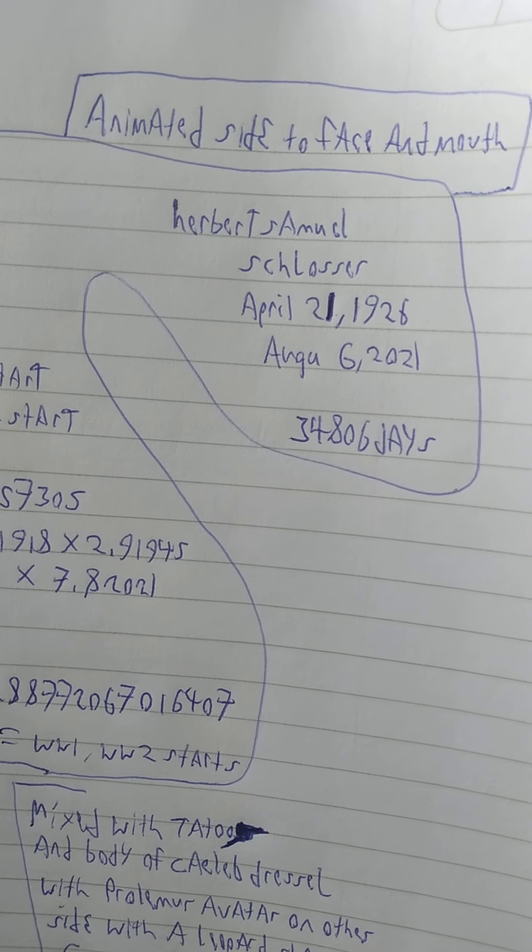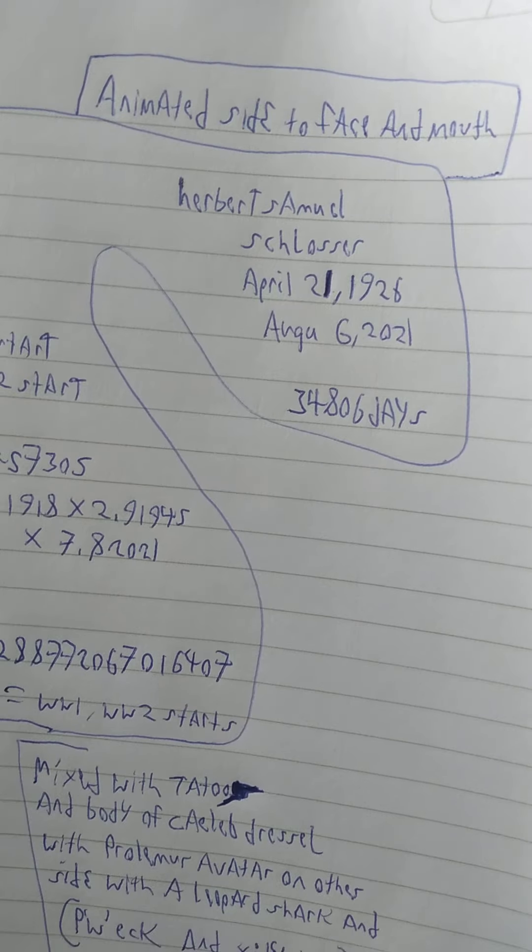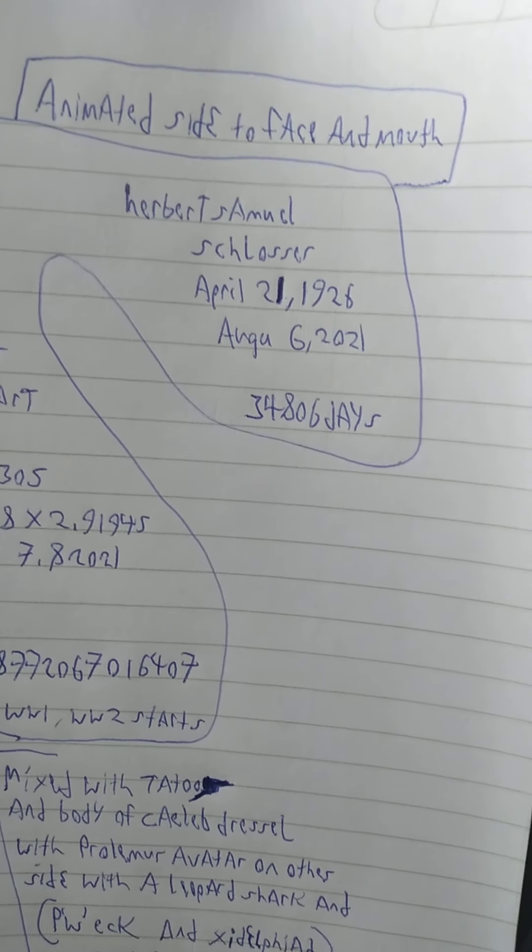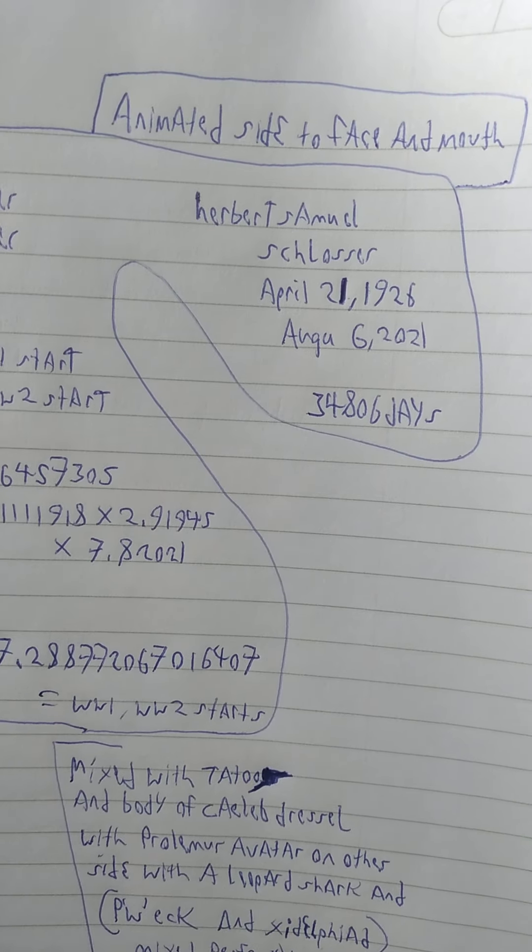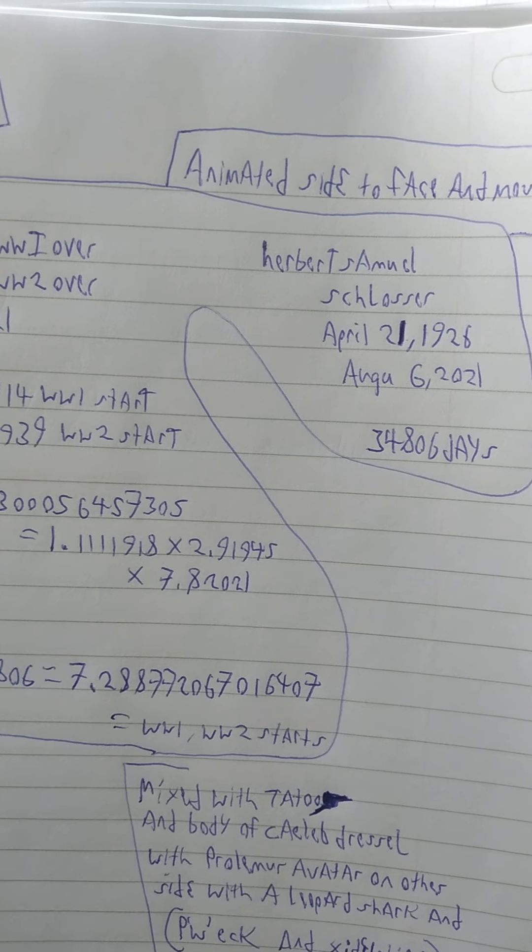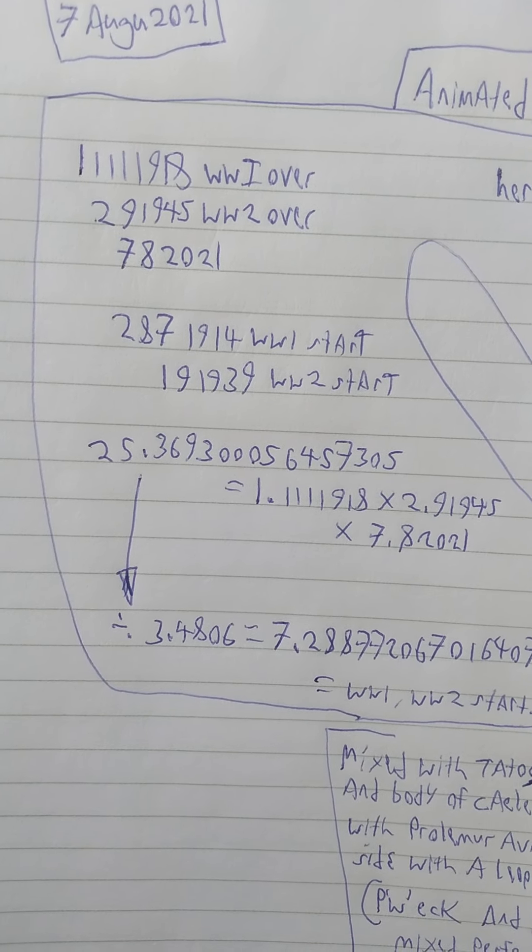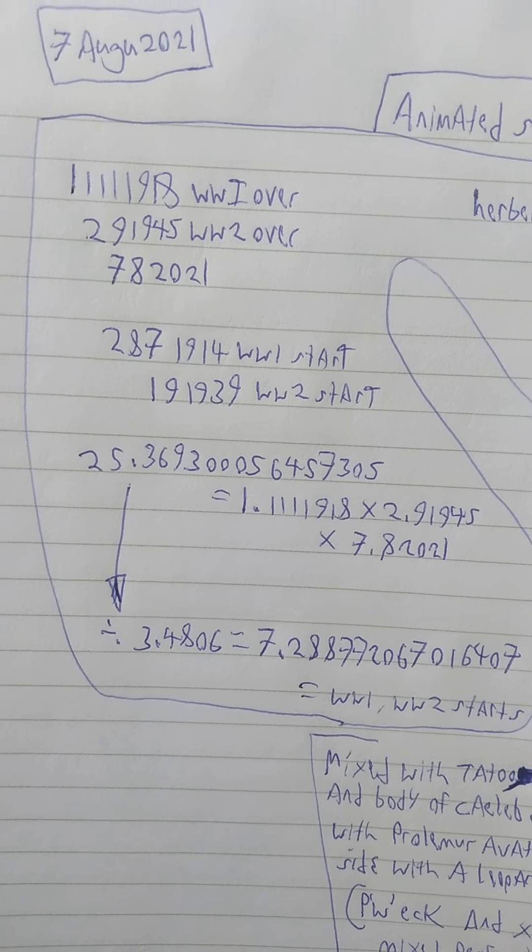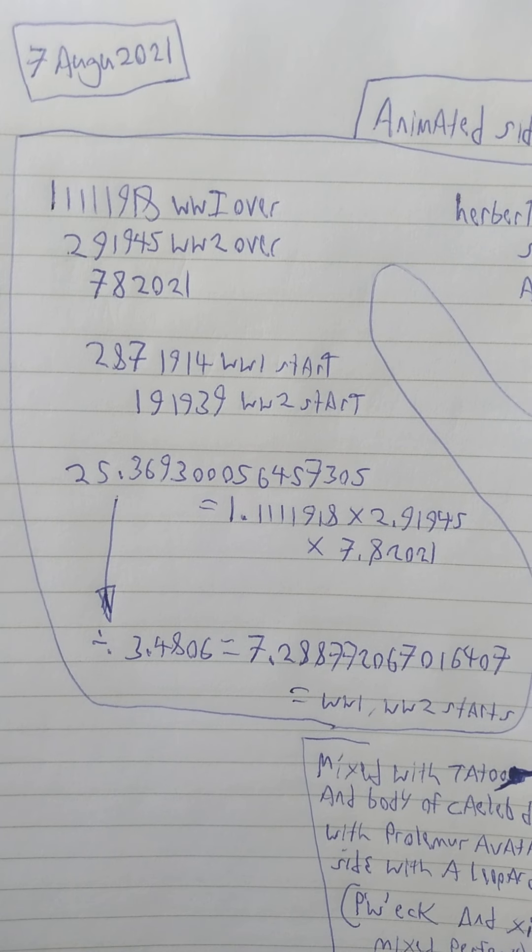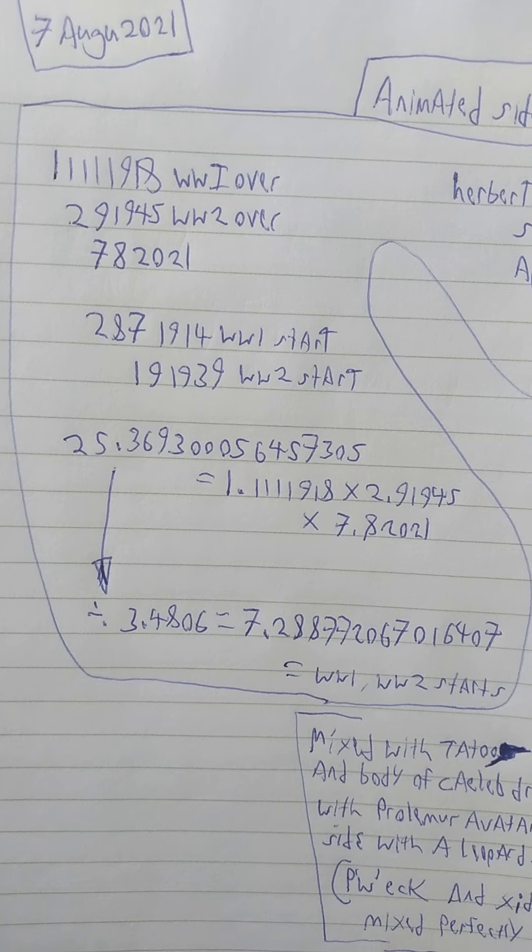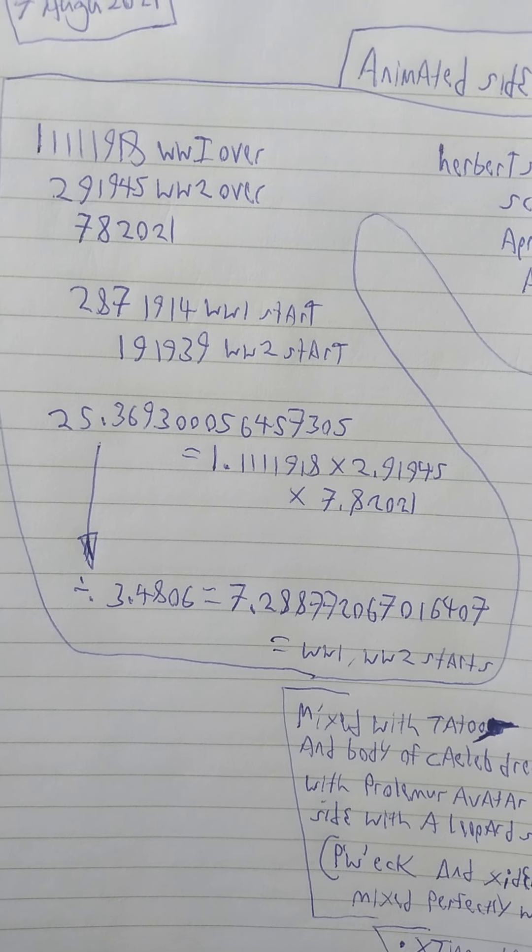Herbert Samuel Schlosser, April 21st to August 6th, 34806 days. Now, 2871914, World War I start, and World War II start is 191939.